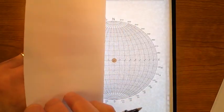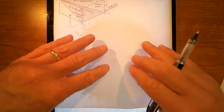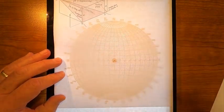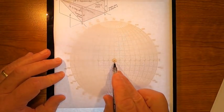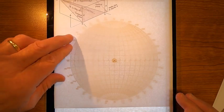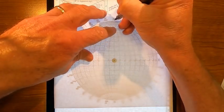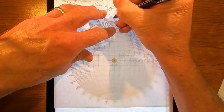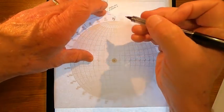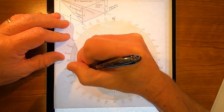Here we go. I've got a stereo net here. I'm going to put my piece of paper over it. I'm going to penetrate it with the tack at the center, that's right there. I'm going to mark north. There's that mark, and I'm going to trace the primitive great circle.